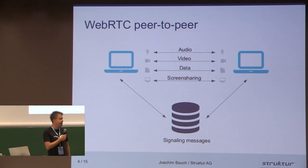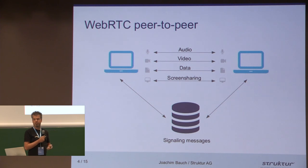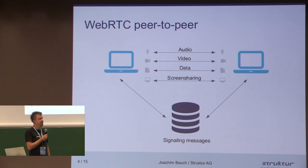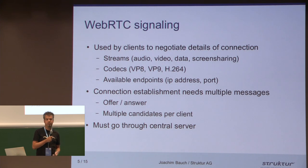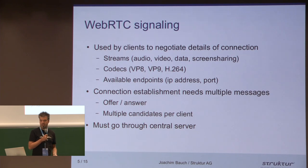I'm talking about a quick overview about how WebRTC works and what it is. WebRTC basically is a peer-to-peer connection between two clients, and over that peer connection there can be different streams — audio, video, data, and also screen sharing. In order to establish that peer-to-peer connection, the clients have to communicate using signaling messages. Parts of those signaling messages are negotiation of the codecs being used, the streams in the peer connection, and also the endpoints over which the clients can be reached — IP address and port — and there's special handling required to support clients behind a NAT or a firewall.